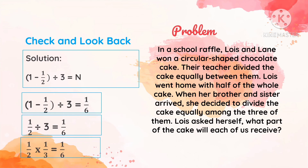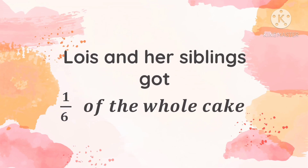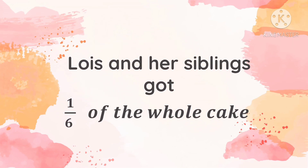One-half times one-third — we change our divisor to its reciprocal and the division symbol to multiplication. So we get 1 sixth is equal to 1 over 6 — check! Our final answer is: Louise and her siblings each got 1 over 6 of the whole cake.